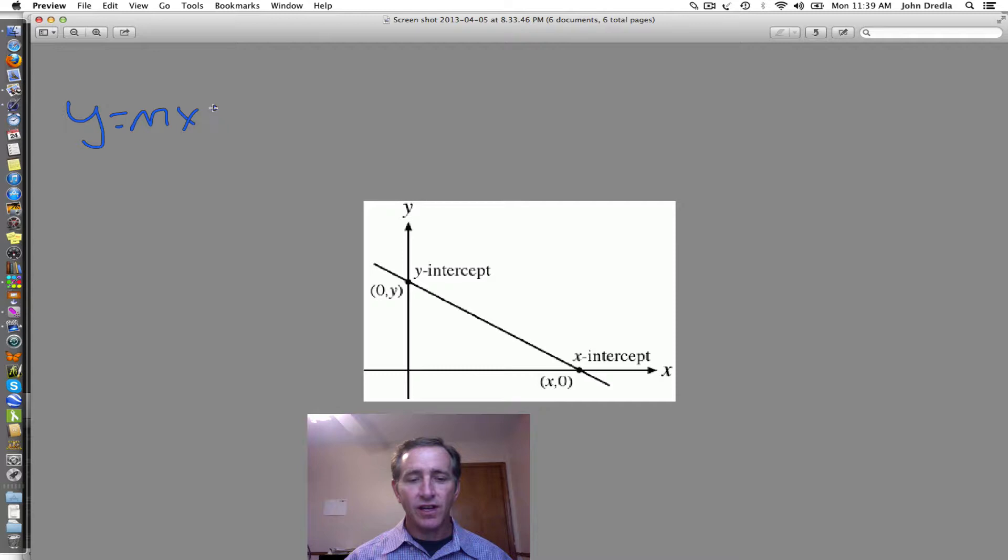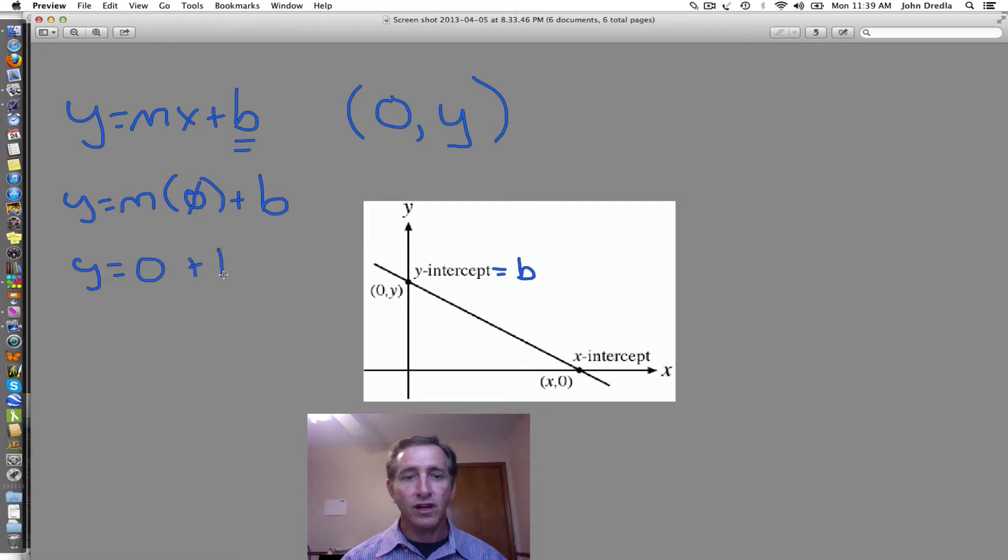The point at which our line crosses the y-axis is called the y-intercept and it's given by the letter b. It's the point at which x is 0. Its coordinates are 0, y.